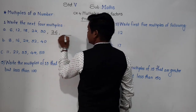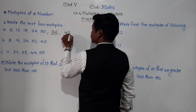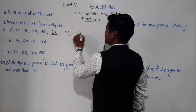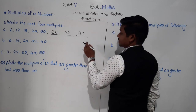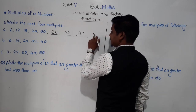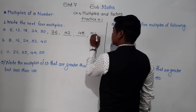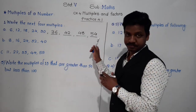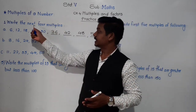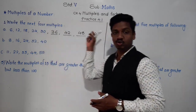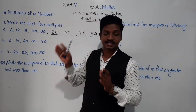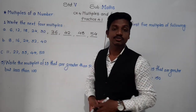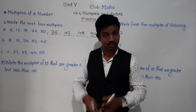So the next 4 multiples after 30 are 36, 42, 48, and 54. If next 5 or next 6 had been asked, we would find 2 more. As I said, they will always give a specific number of multiples to find, because multiples are uncountable.